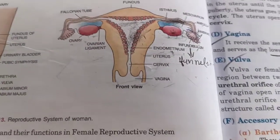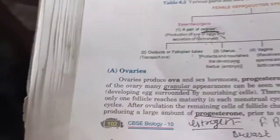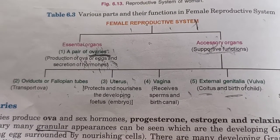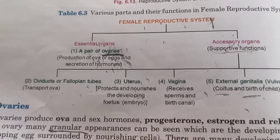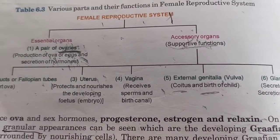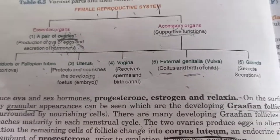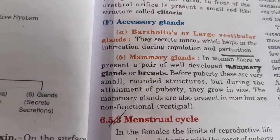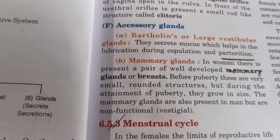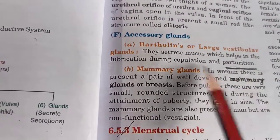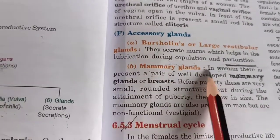Let me repeat for clarity: the female reproductive system is divided into two parts — essential and accessory. Under essential comes the ovaries, which produce eggs and sex hormones. Under accessory organs come: fallopian tubes, uterus, vagina, external genitalia, and glands. The two glands are Bartholin's and large vestibular glands, which secrete mucus — a watery-like substance that helps during delivery (parturition) and during copulation (sexual intercourse).